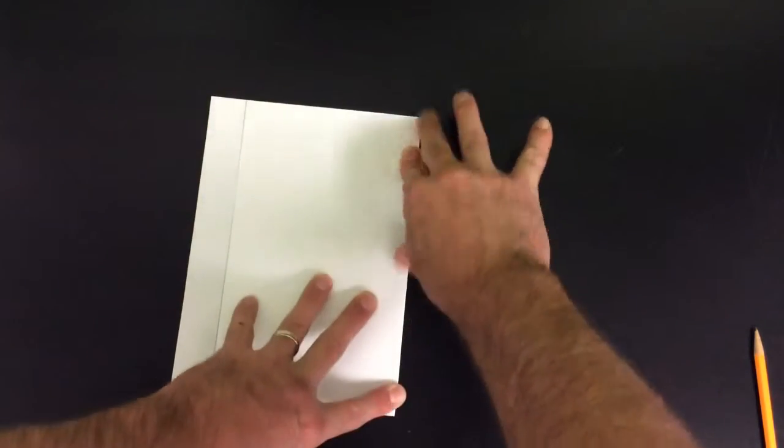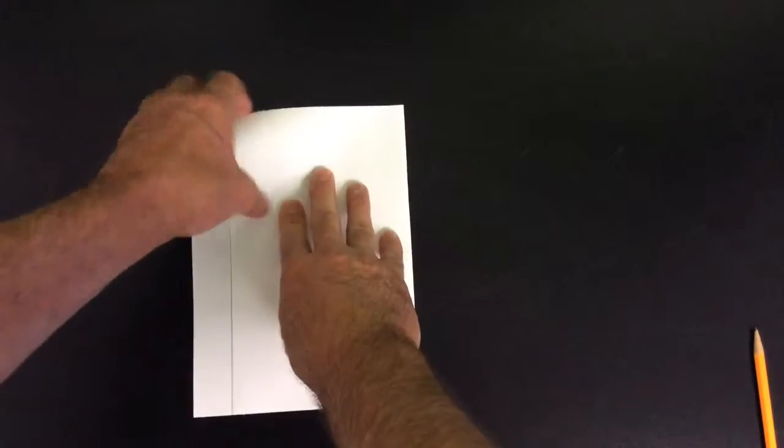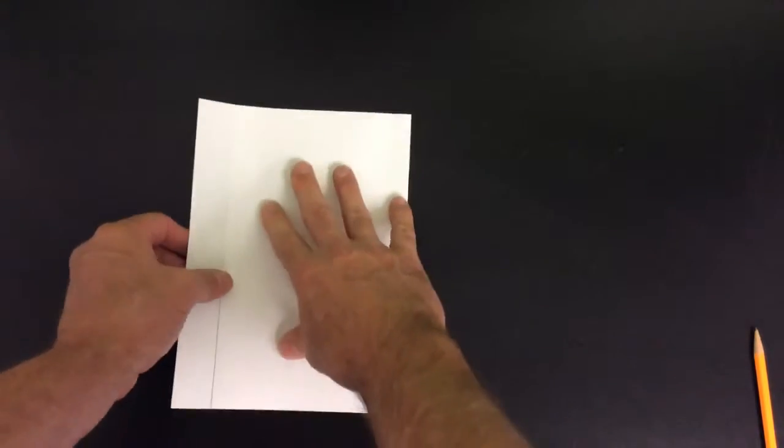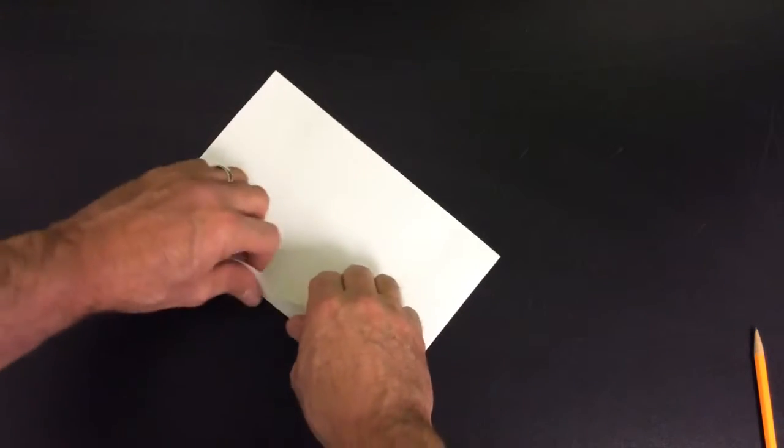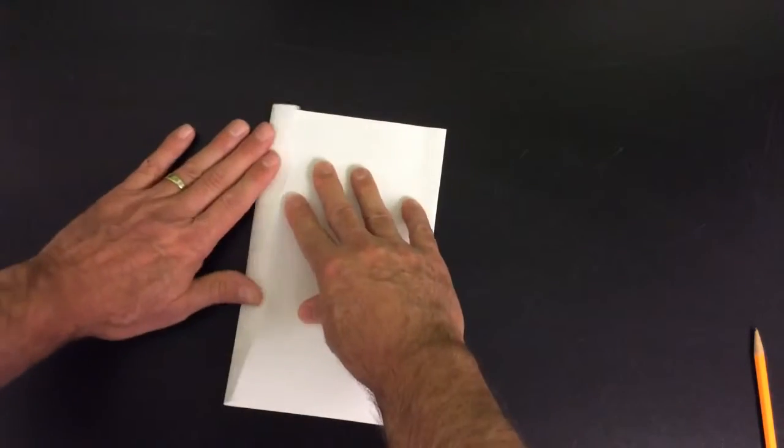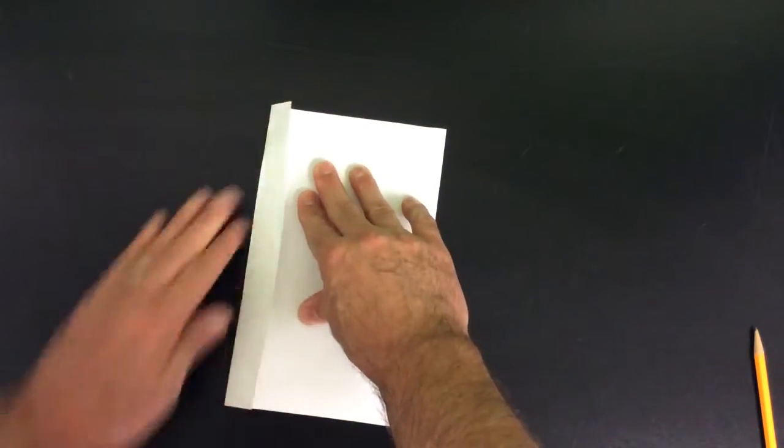Crease this side, and then this flap is going to fold over on top of that. So if you crease that, fold it over, it should go on there perfectly like that. Okay, so that's the first part.